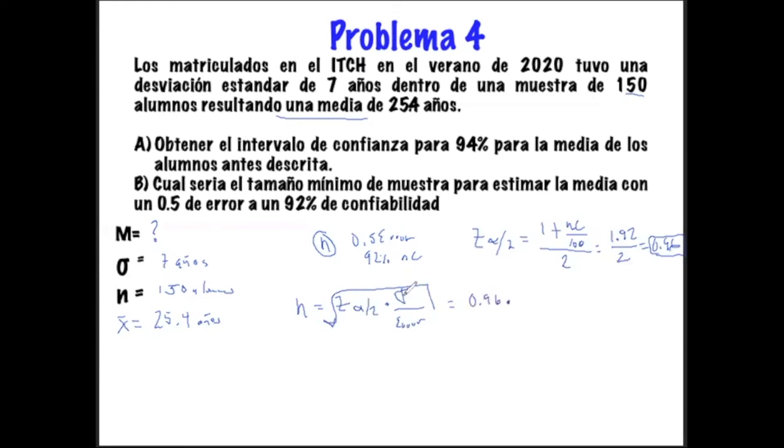Y tendremos que entonces nuestro tamaño de muestra para este error que nos están pidiendo sería de, primero sustituimos el Z alfa medios que sería 0.96, luego lo vamos a multiplicar por los 7 años de desviación estándar que tenemos, y lo vamos a dividir entre el error que nos están comentando aquí, que es 0.5. Y una vez que se hace toda la multiplicación, se le saca raíz cuadrada. Entonces, voy a poner aquí el resultado final. Esto nos da 14 y luego multiplicado por 0.96 nos da 13.44 raíz. Entonces, nos da igual a 3.666. Este sería nuestro tamaño mínimo de muestra.